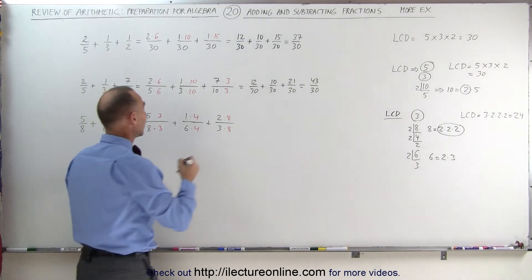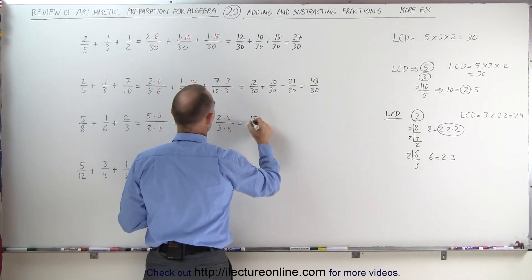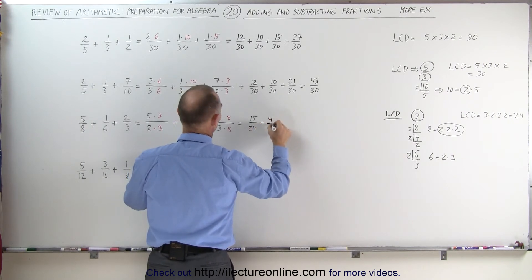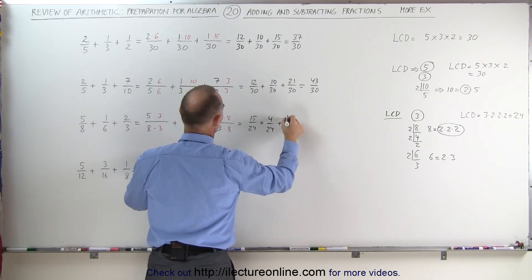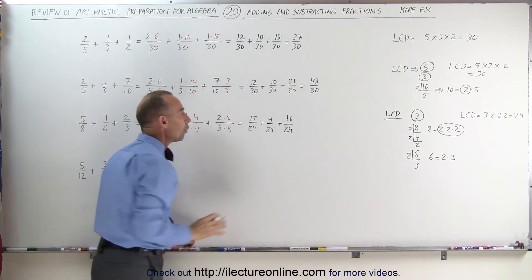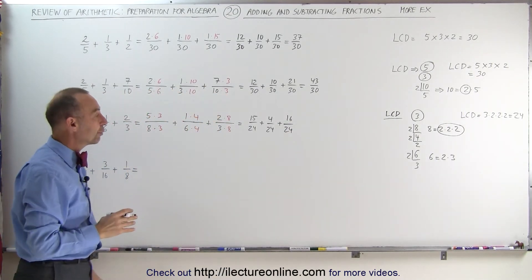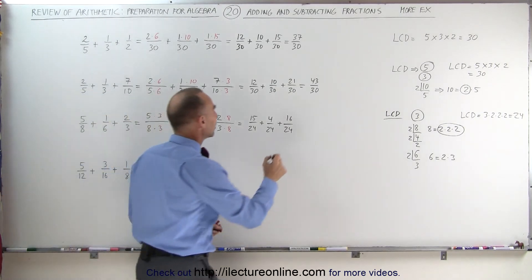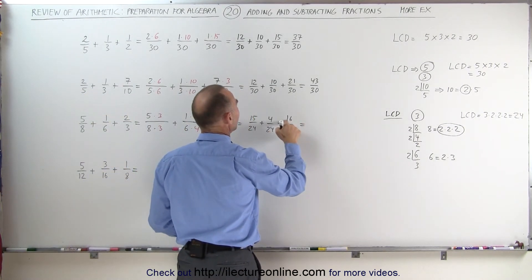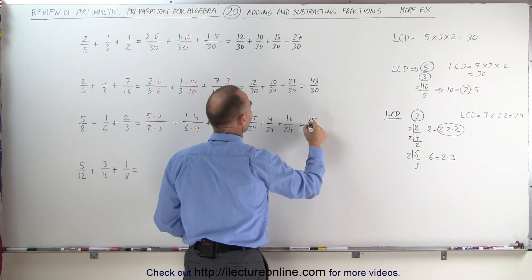Now when I've worked this out, I end up with 15 over 24 plus 4 over 24 plus 16 over 24. Notice that all three fractions now have a common denominator of 24, so I can add the numerators together. 4 plus 16 is 20, add to 15, gives me 35 divided by 24.